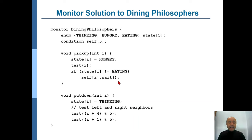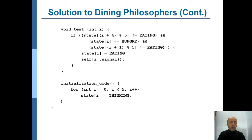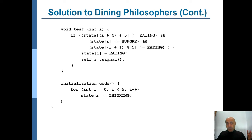Now let's look at what the test function does. We set the state to hungry to show our intent to eat, and call test by providing our own ID. The philosopher tests itself at that moment. While testing for itself, it looks at its right and left neighbors. If the philosophers sitting on the left and right are not eating, and this philosopher is hungry, then since the neighbors are not eating, the chopsticks are available.